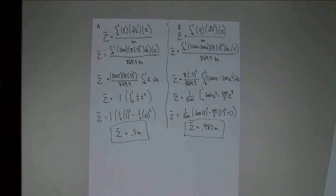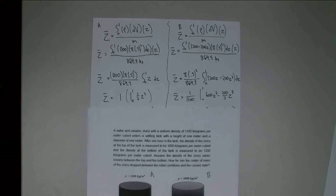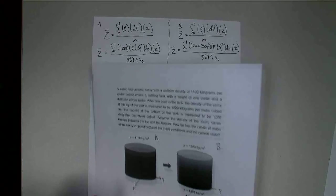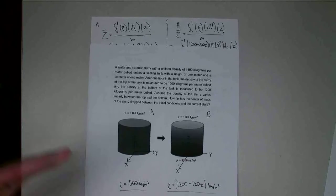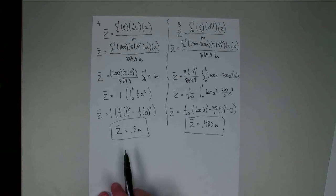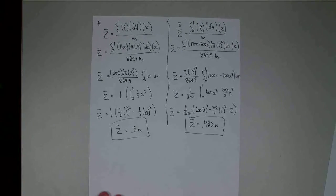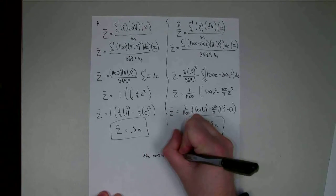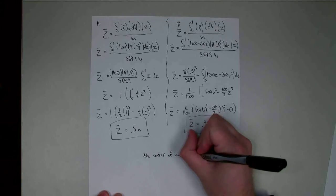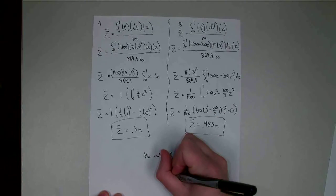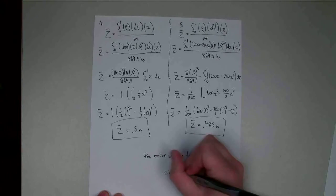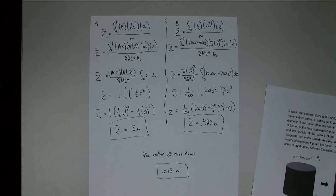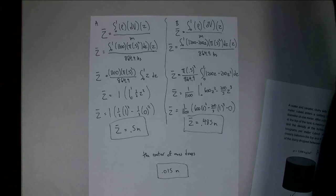So the original question was: how far did the center of mass drop between state A (uniform density) and state B (settled tank)? Going from 0.5 m to 0.485 m, the center of mass drops by 0.015 meters. With that, the problem is solved. Thank you for watching, and I hope to see you again.